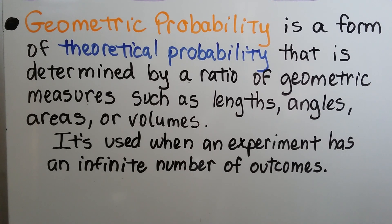Geometric probability is a form of theoretical probability that is determined by a ratio of geometric measures such as lengths, angles, areas, or volumes, and it's used when an experiment has an infinite number of outcomes like the experiment we're about to do.